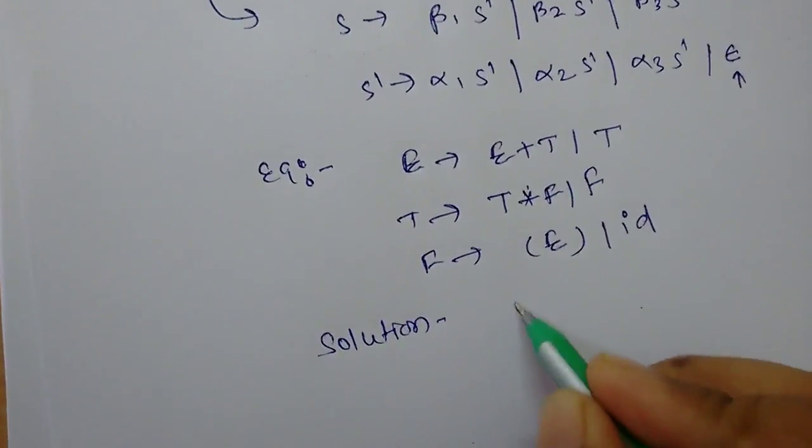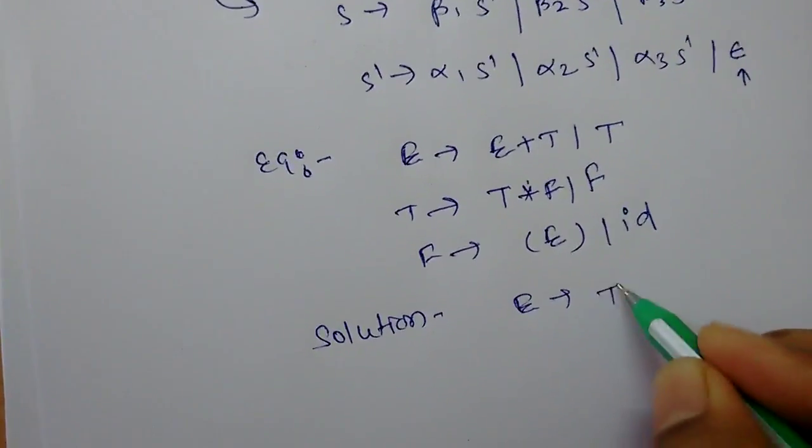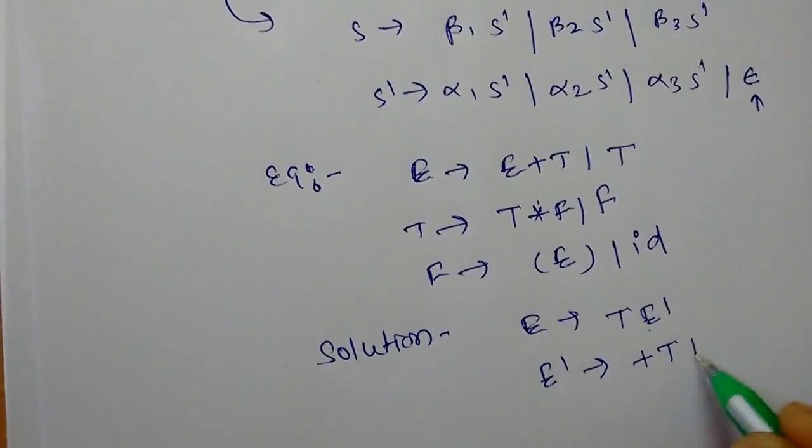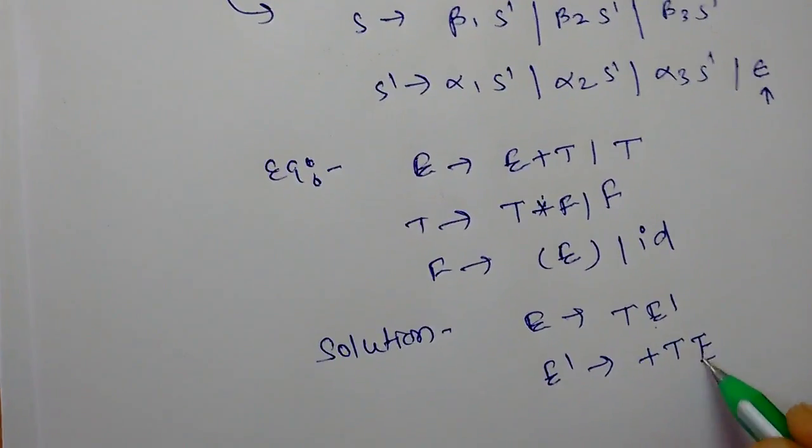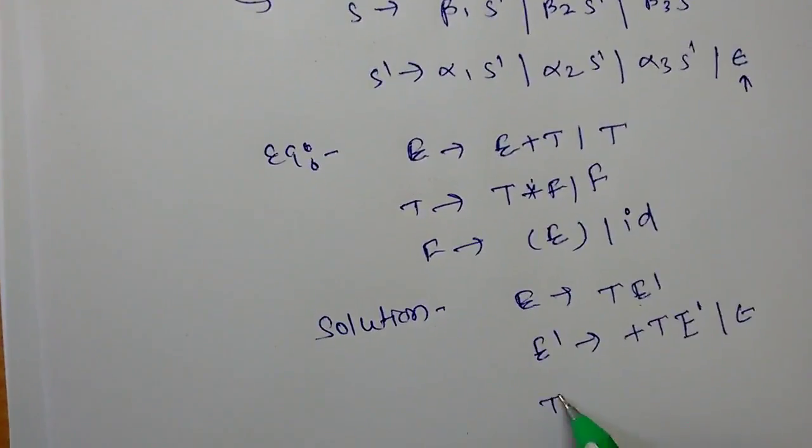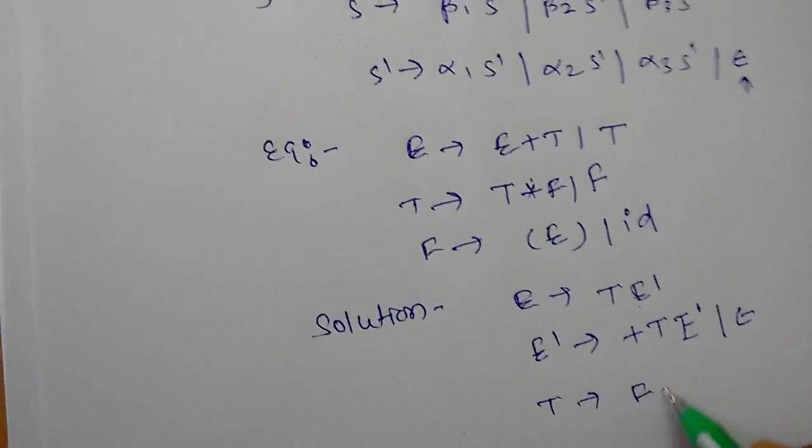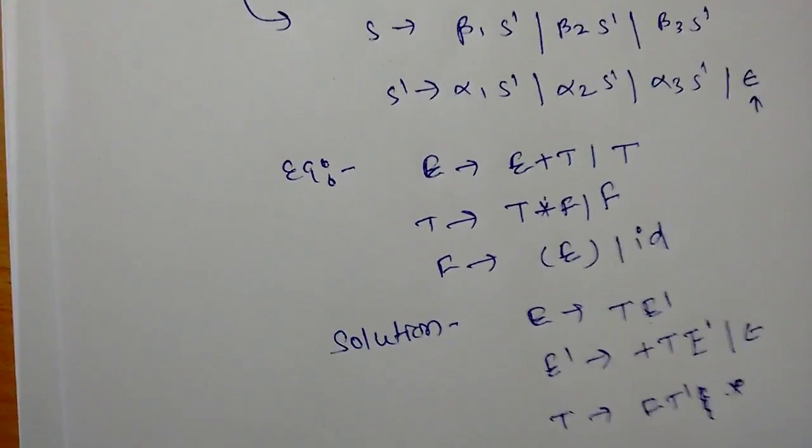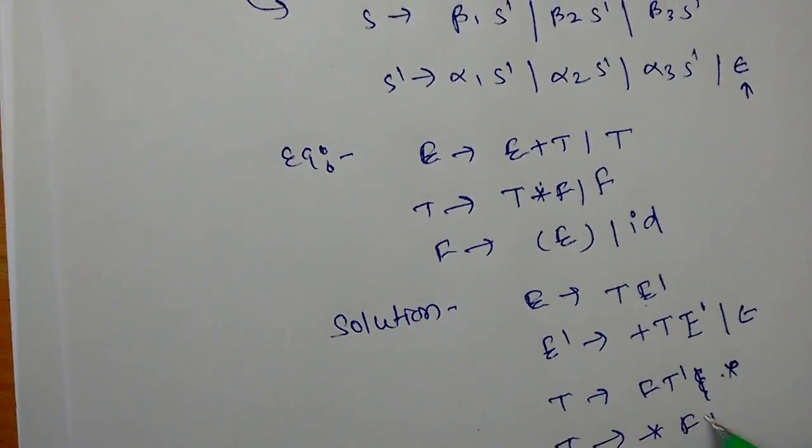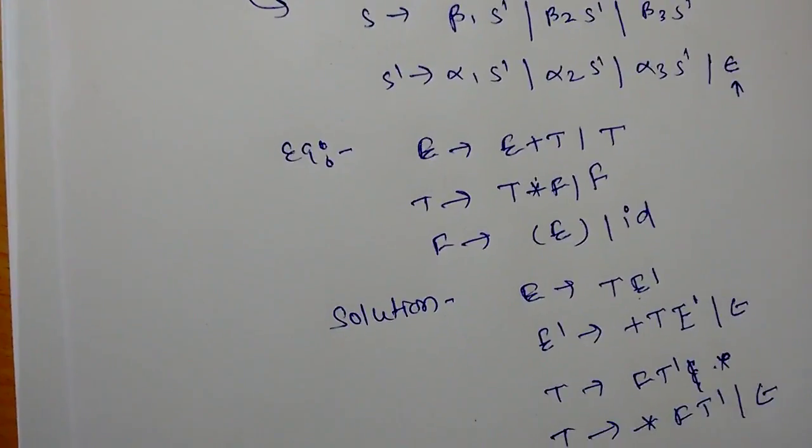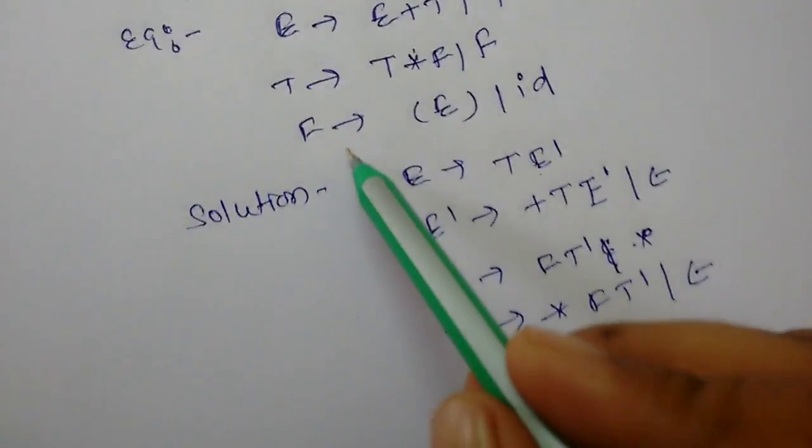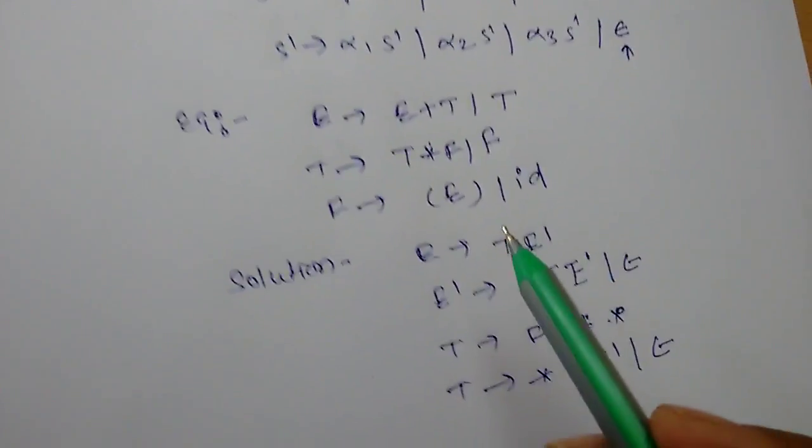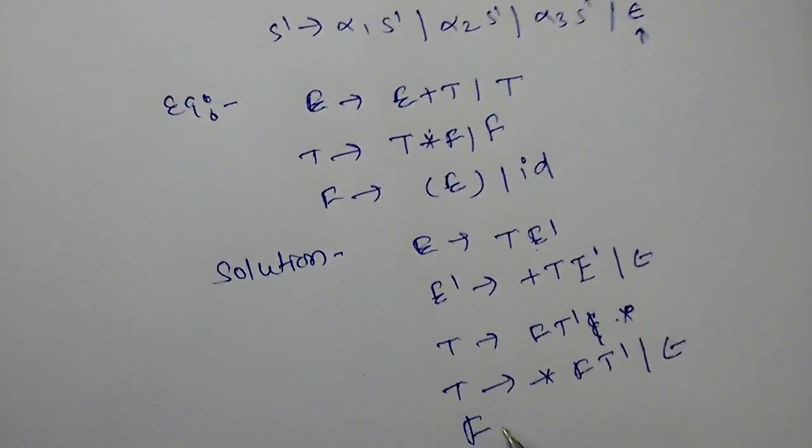The solution will be: E goes to T E dash. E dash goes to plus T E dash or epsilon. T goes to F T dash. T dash goes to star F T dash or epsilon. The last production F doesn't have left recursion, so we will write it as is. F goes to the original production.